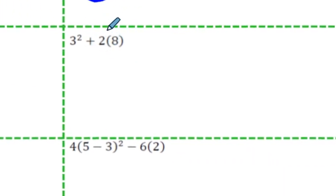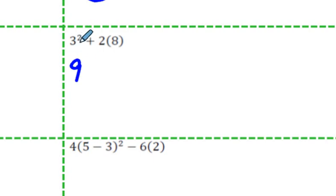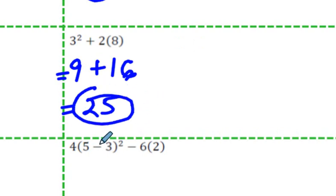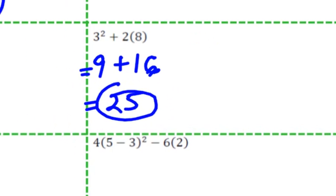This one here — what should we do first? Well, 3 squared we're supposed to do first because it's an exponent. 3 times 3 is 9. Just be careful: 3 to the power of 2 is not 6 — a lot of people make that mistake. And 2 times 8 is 16. And this plus this should be 25. Let's keep motoring along.